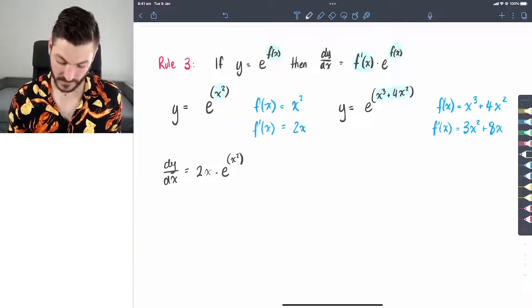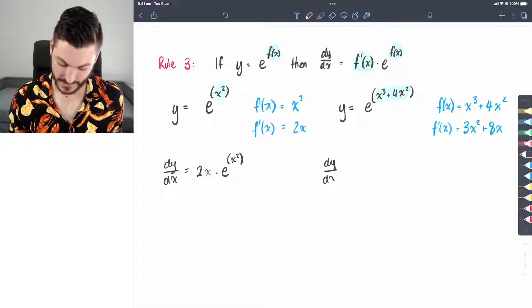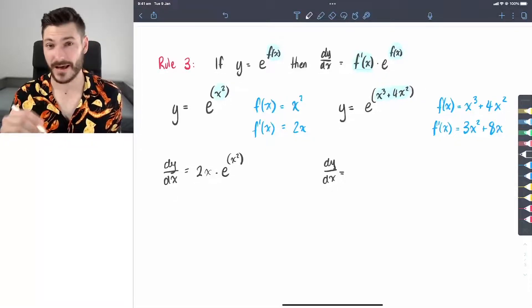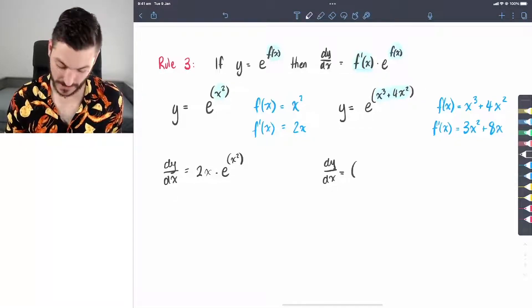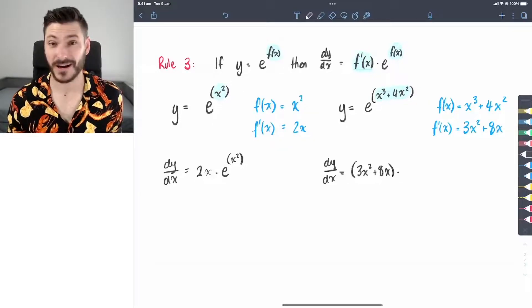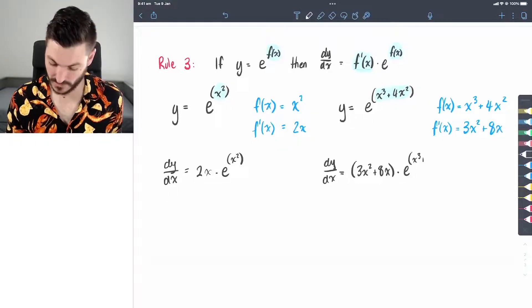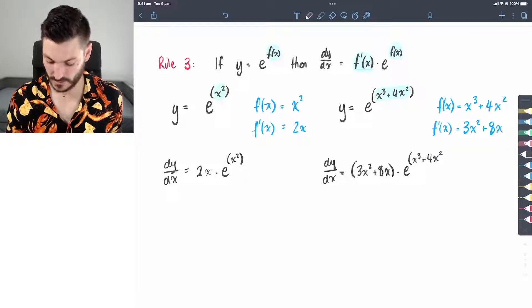Now, when we find the derivative of y down below dy dx, it's going to be that f dash x, which is in brackets, 3x squared plus 8x times by the original function or e to the power of x cubed plus 4x squared.